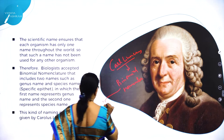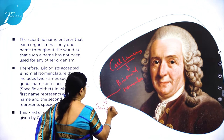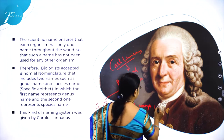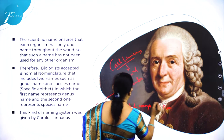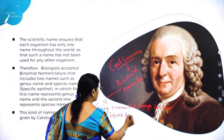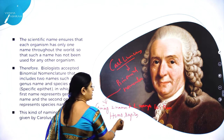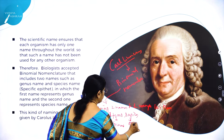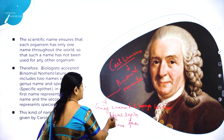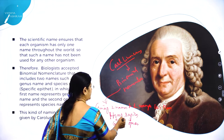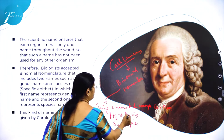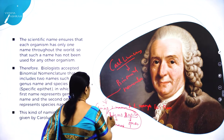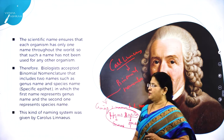Binomial nomenclature means giving two names to one organism. For example, the scientific name of man is Homo sapiens — you can see that the genus name 'Homo' starts with a capital letter followed by small letters, and the species name 'sapiens' starts with a small letter followed by small letters. This is the way you have to write the scientific name.